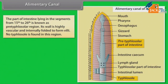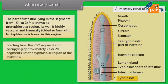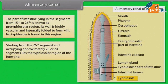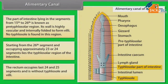The pre-typhlosolar region walls are highly vascular and internally folded to form villi; no typhlosole is found in this region. Starting from the 26th segment and occupying approximately 23 or 24 segments lies the typhlosolar region of the intestine. The rectum occupies the last 24 and 25 segments and is without typhlosole and villi.